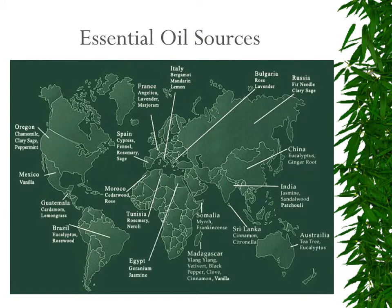Essential oils are found and produced all over the world. For example, in Oregon they produce chamomile, clary sage, and peppermint. Mexico is known for its vanilla. Brazil for its eucalyptus and rosewood. Spain for its cypress, fennel, rosemary, and sage. Tunisia for rosemary and neroli. Somalia, of course, for frankincense and myrrh.